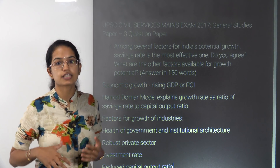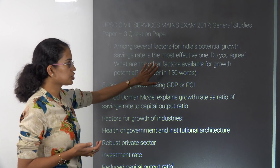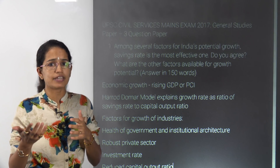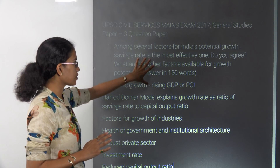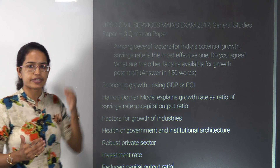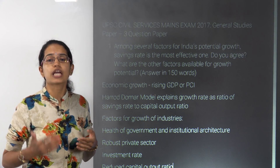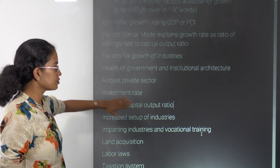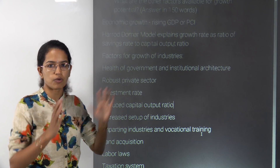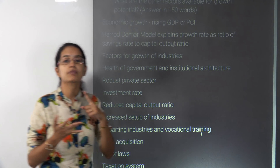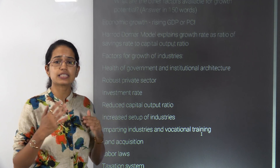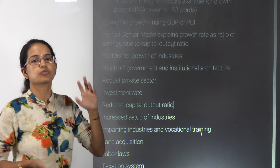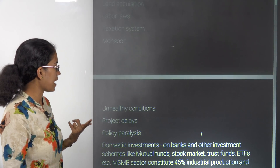Besides that, numerous factors boost industrial growth. Good institutional structure is one. Healthcare infrastructure is another — a healthy workforce yields better productivity. The role of the private sector matters, including mobilization of private investment and development of the service sector, which now contributes a fair share of GDP compared to manufacturing. Reducing the capital output ratio, developing more labor-intensive industries, acquiring and leasing land efficiently, and streamlining the taxation system are also major factors.